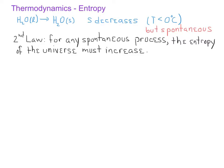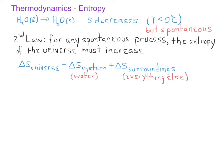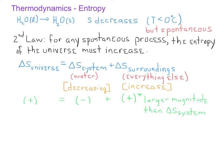We can make sense of this by dividing the universe into two parts. The first part we'll call the system, and in this example, that would be the sample of water that is freezing. The rest of the universe — the universe that is not part of the system — is going to be called the surroundings. So if the entropy of the system is decreasing, that means there must be an increase in the entropy of the surroundings. Furthermore, for the entropy of the universe to increase, the entropy change of the surroundings must be positive and greater in magnitude than the decrease in the entropy of the system.